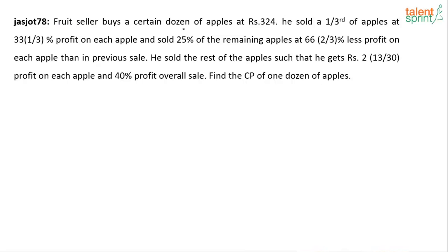A fruit seller buys a certain number of dozens of apples at rupees 324. He sold one third of apples at 33 and 1/3 percentage profit on each apple, and sold 25 percent of the remaining apples at 66 and 2/3 percentage less profit on each apple than in the previous sale. He sold the rest of the apples such that he gets rupees 2 and 13/30 profit on each apple and 40% overall profit. Find the cost price of one dozen of apples — a very complex situation in terms of the numbers given.